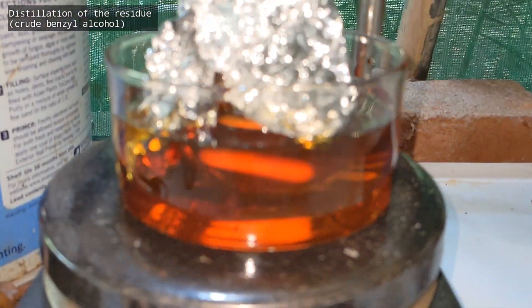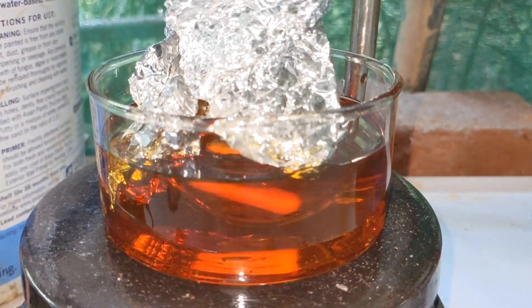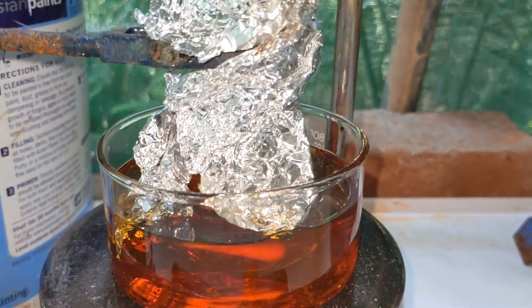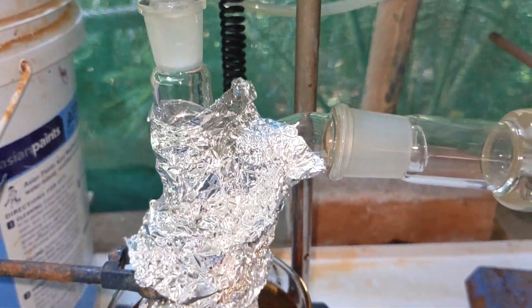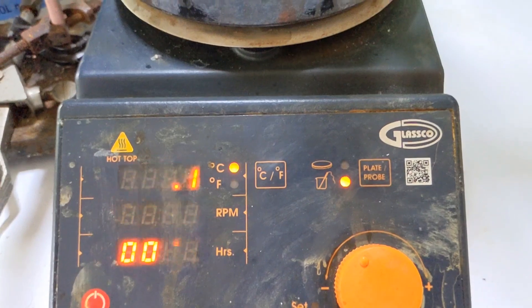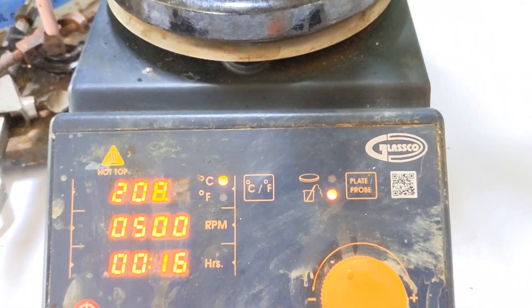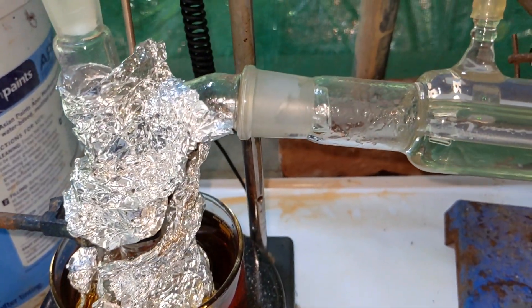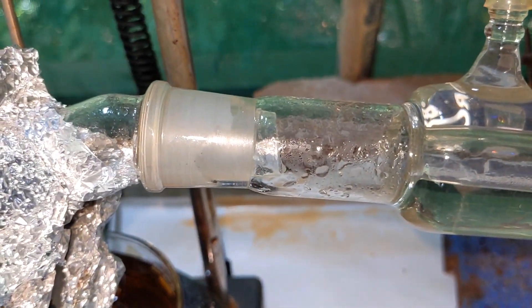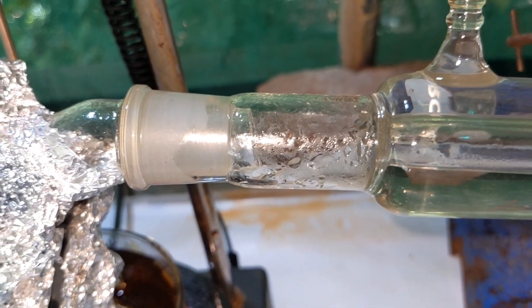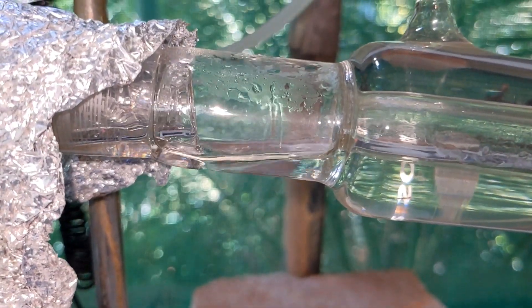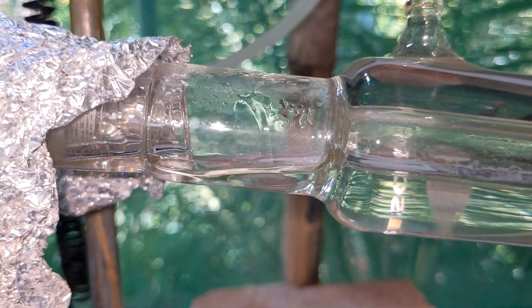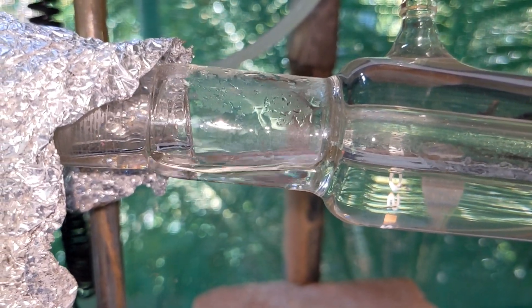Once all the ether was distilled over, the water bath was replaced by an oil bath and the residue that contains benzyl alcohol was distilled. Aluminum foil was used for efficient heat. At around 208 degrees Celsius distillation has started and the product is getting distilled over in a steady sequence. It is actually a colorless clear solution as you can see in the initial part of the condenser.